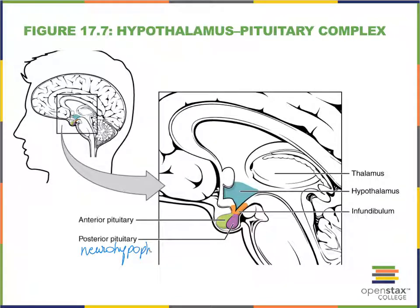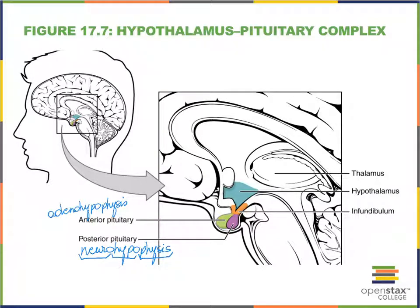Any word that has the term 'physis' in it always refers to growth; 'hypo' means below, and 'neuro' refers to nervous tissue. The anterior pituitary is referred to differently as the adenohypophysis, where 'adeno' refers to truly glandular tissue — and indeed it is made up of epithelial tissue, like all true glands are.